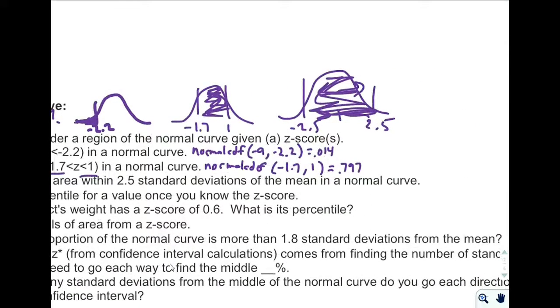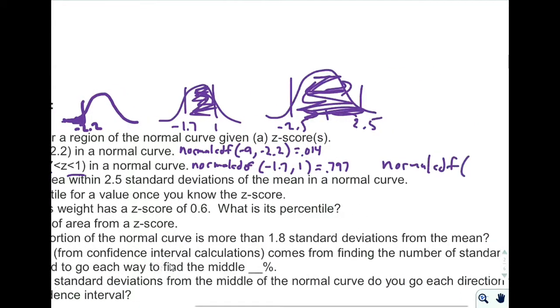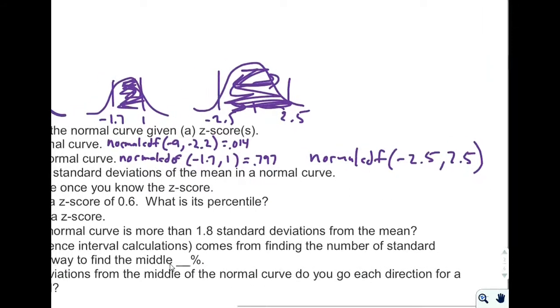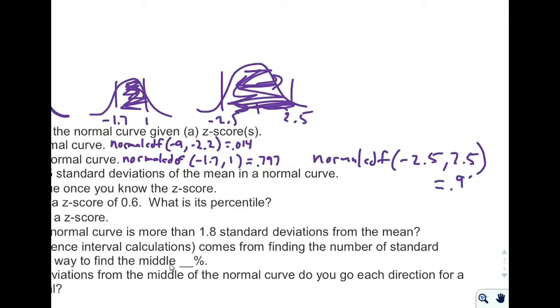So normalCDF, and I'm trapped between negative 2.5 and 2.5. And when I type that into my calculator, I get 0.988 if I round that off. So almost 99%.